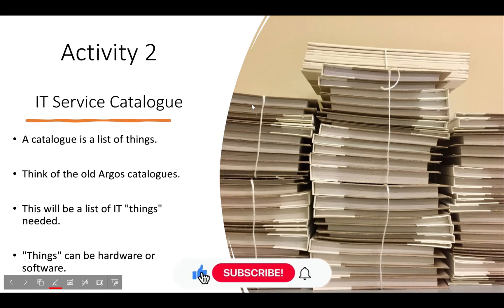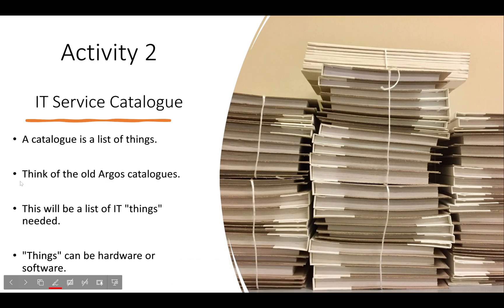Welcome back. This is Activity Two, and the name of Activity Two is IT Service Catalog. A catalog is a list of things — think of the old Argos catalogs, or think of a catalog as simply a collection of items. When you go into Amazon and type in 'gaming laptop,' you're going to see everything that Amazon sells on that topic. That's their catalog.